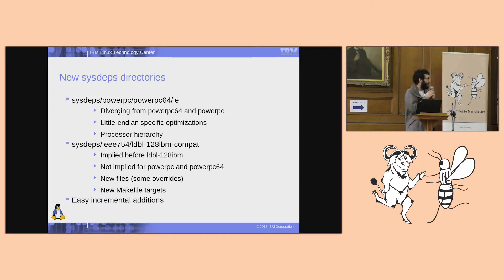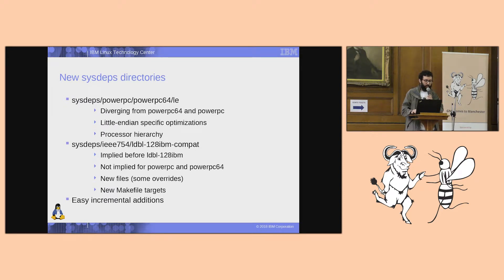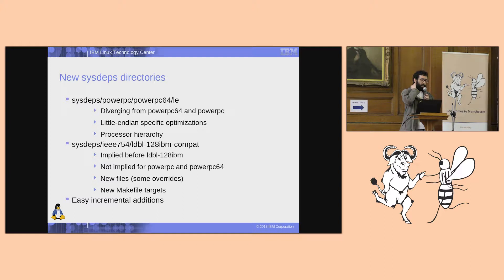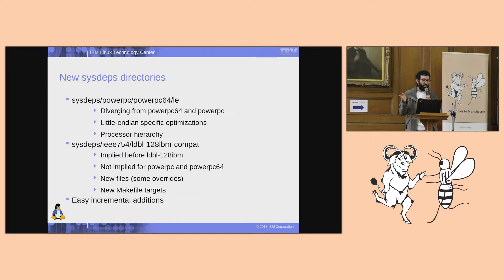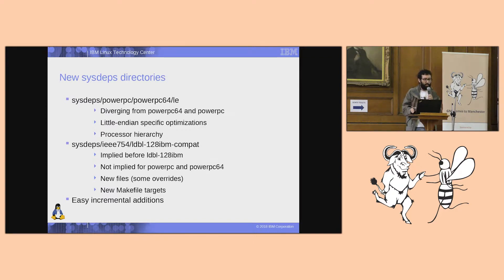We can make new Makefile targets, which eases the addition of new functions. Alongside this, we had to separate the sysdeps directory for the 64-bit little-endian architecture. We used to have all 64-bit files in the same directory, but it became hard to separate the two architectures because they are getting very different from each other. By having a new directory, PowerPC64/LE, this contains all the code for little-endian, and the topmost directory can contain code reusable by both big-endian and little-endian 64-bit.